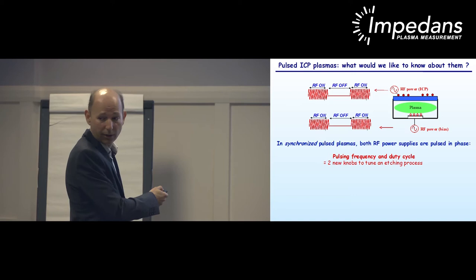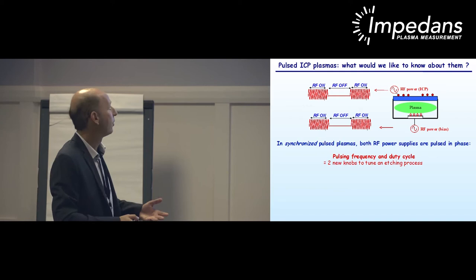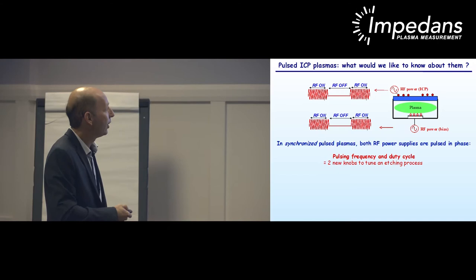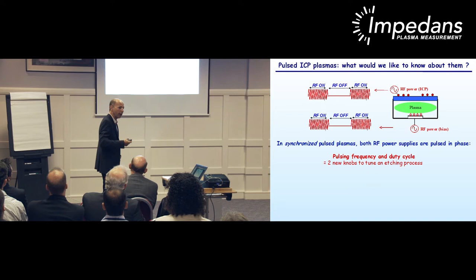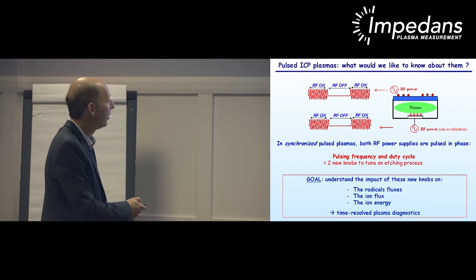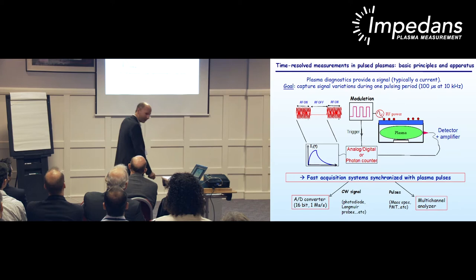If we need energetic ion bombardment of the wafer, we can switch the bias power on, pulsed in phase with the ICP power — I will refer to these as synchronized pulse plasmas. We can control the frequency of the plasma pulses and their duty cycle, which is the percentage of time during which the RF is on. By pulsing the plasma, we have two new knobs to tune an etching process: pulsing frequency and duty cycle. To use those knobs efficiently, we have to understand their impact on radical fluxes, ion flux, and ion energy — this is why we want to use time-resolved plasma diagnostics.